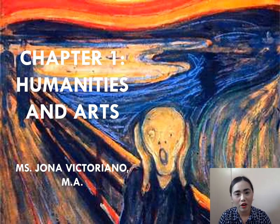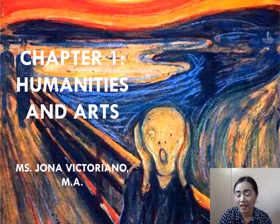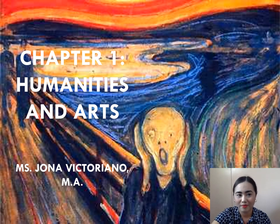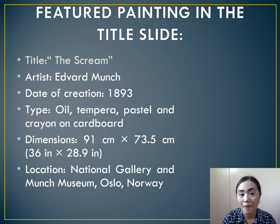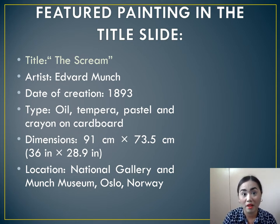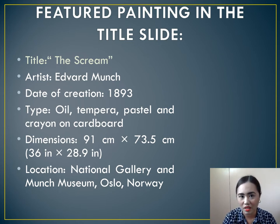Before we begin with our basic objectives, let us tackle first the featured painting in your title page. This painting is entitled The Scream by Edvard Munch. It was created in 1893, using oil, tempera, pastel, and crayon on cardboard. It has a dimension of 91 centimeters by 73.5 centimeters, and it is currently housed in the National Gallery at the Munch Museum in Oslo, Norway.